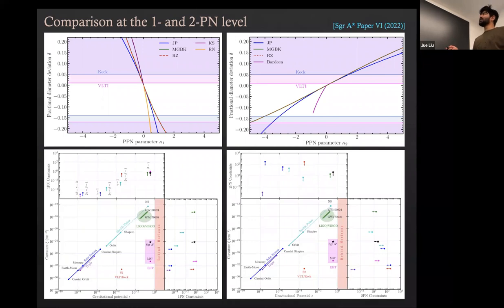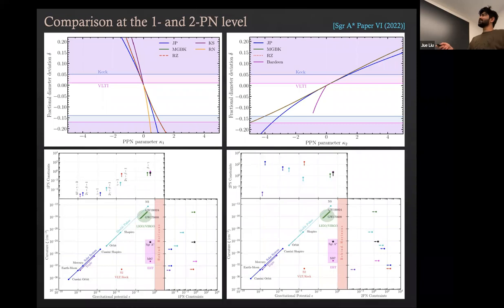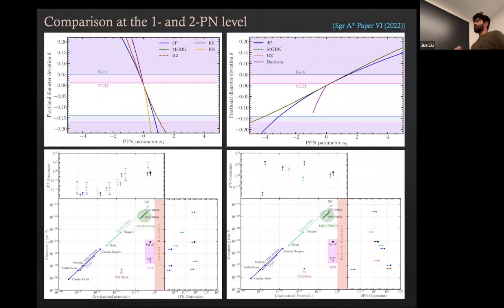We can also do a post-Newtonian parameter test. Casting all previous results onto PPN axes, we get constraints on post-Newtonian parameters. The EHT results are comparable with other PPN tests from other measurements of GR. So we get tight constraints on PPN parameters from black hole shadow observations.